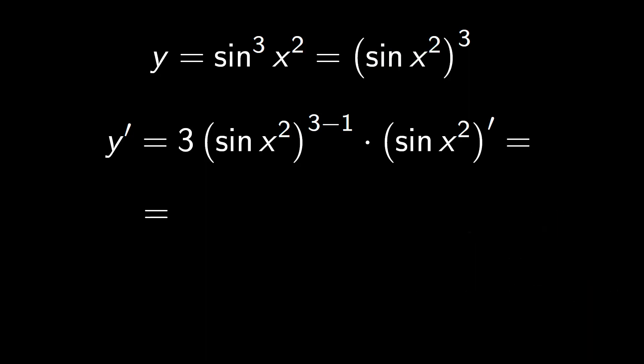This becomes 3 times the sine of x squared to the power of 3 minus 1, which is 2, times the derivative of sine x squared, which is the derivative of sine and cosine of x squared, and by the chain rule times the derivative from inside. The derivative of x squared is 2x.